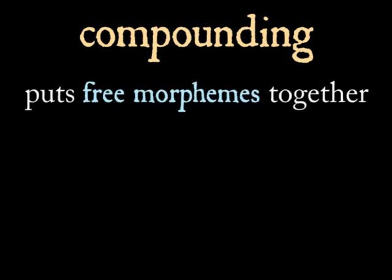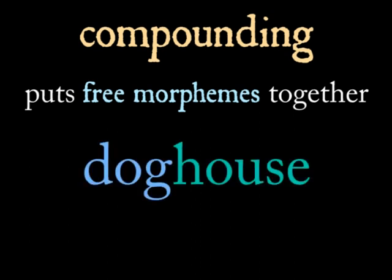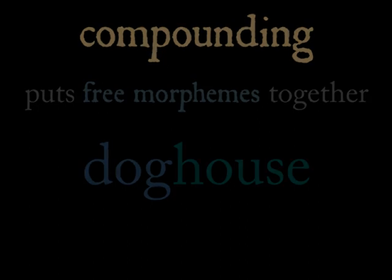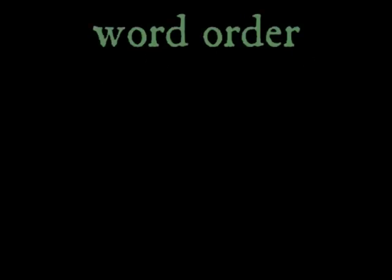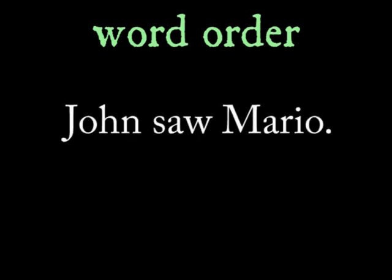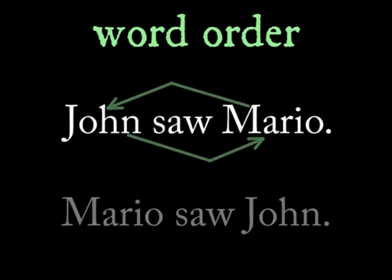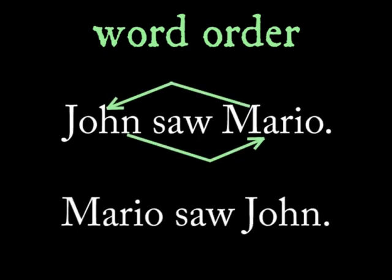Compounding is kind of like attaching a derivational morpheme in a language that allows it, but the two morphemes are free. For instance, 'dog house' attaches the free morpheme 'dog' and the free morpheme 'house' to come up with a new concept. Rearranging word order is also a useful technique that's very common for expressing grammar.